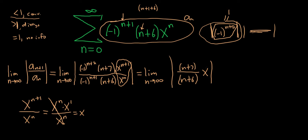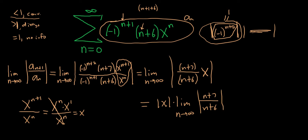Now we can go ahead and take the limit. The x is independent of n — it has nothing to do with the limit. Some people like to pull the x out of the limit like this. This is actually allowed because the limit is with respect to n going to infinity, and you can treat x as an independent variable, so you can pull it out.